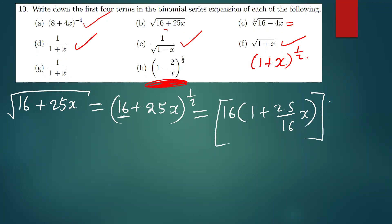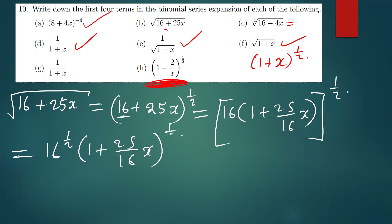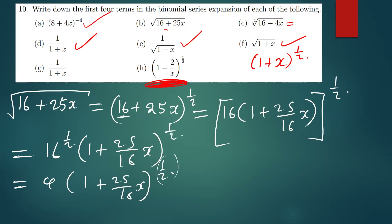Using the same procedure as last time, simplifying further we get 16 to the power half, in brackets (1 + 25/16 x) to the power half. This gives us the square root of 16, which is 4. So we have 4 times the expansion of (25/16 x) to the power half. The value of n and the value of a are identified, and you can expand this using the binomial extension.